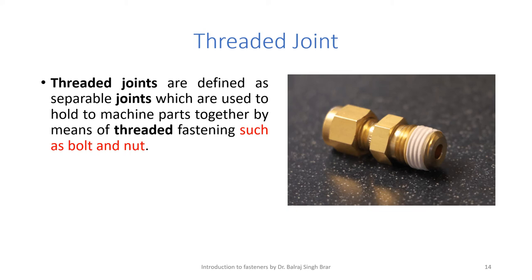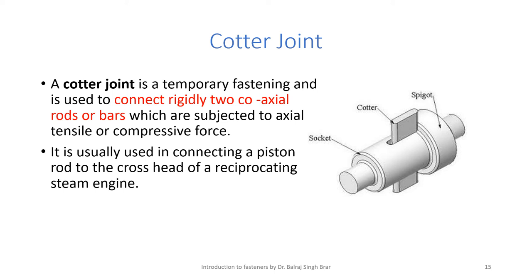A cotter joint is a temporary fastening used to connect rigidly two coaxial rods or parts that are subjected to axial tensile or compressive force. One rod end is given the shape of a socket, and another rod end is given the shape of a spigot. The spigot goes inside the socket, and there is a common slot between them in which a rectangular cotter is put. It is commonly used in connecting a piston rod to the crosshead of a reciprocating steam engine. The cotter can simply be removed to separate the socket and spigot ends.